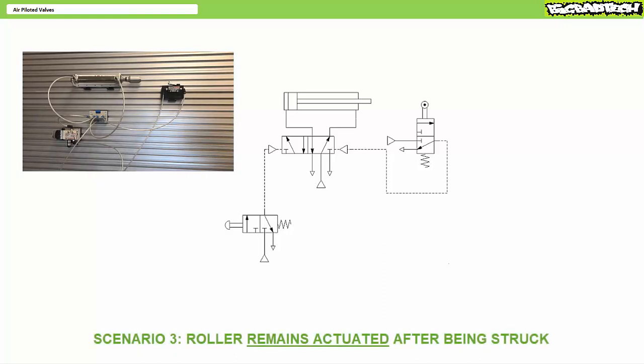Scenario three: troubleshooting. There is no limit to the crazy things that can happen in an industrial setting. Consider what happens if the roller actuator is a little sticky — either because of age or uncleanliness — and when actuated, remains triggered. What happens and why? Will the system work as intended, and for how long? This is also a priority scenario.